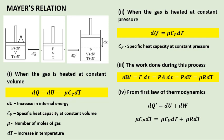So, we replace dQ prime by mu times Cp dT, dU by mu times Cv dT, and dW by mu times R dT.